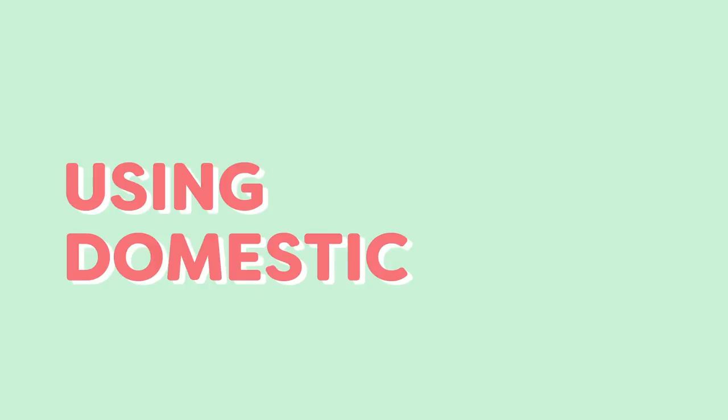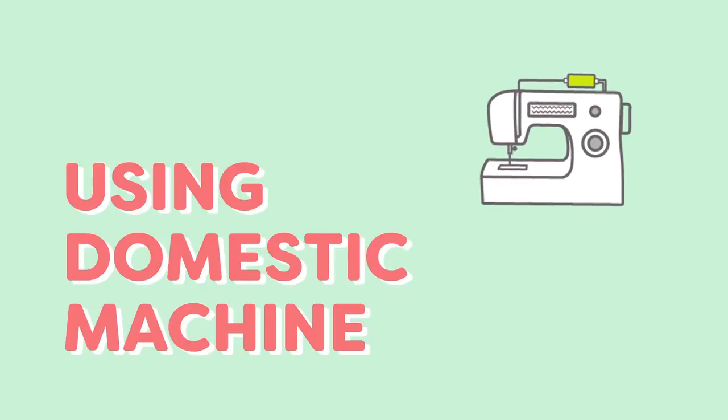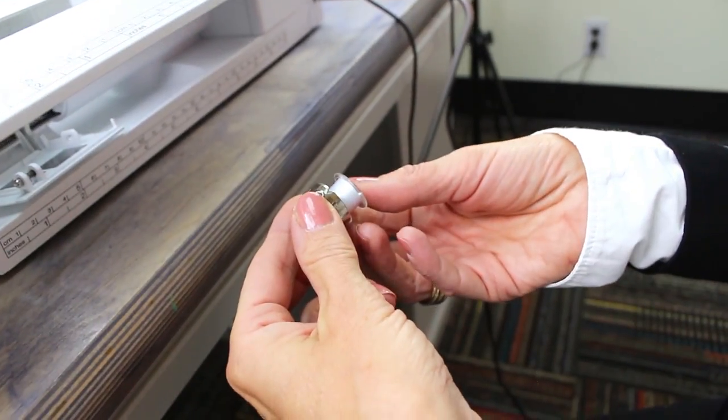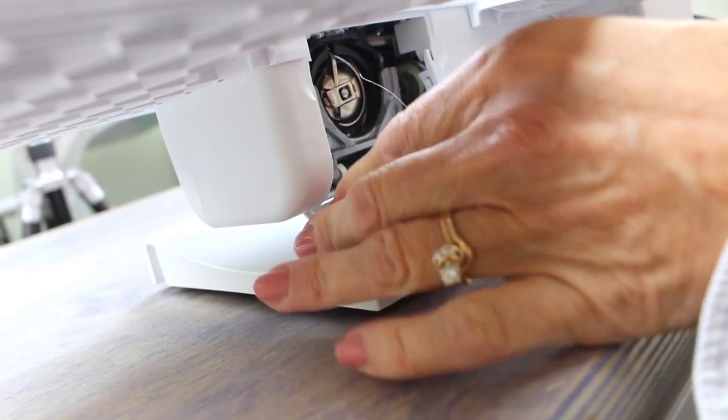If you want to hem fine fabric on a domestic machine, this 2 step method will help you achieve perfect results. Mark where you want your finished hem and cut 1 inch below the marked line. Thread your machine with Invisifil on top and DecoBob in the bobbin. Now you're ready to sew.